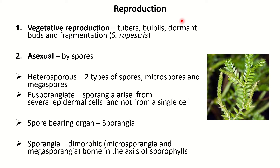Selaginella reproduces vegetatively by means of tubers, bulbils, dormant buds, and fragmentation. Tubers appear towards the end of the growing season. They may be aerial, developing at the apical end of aerial branches, or subterranean. Under favorable conditions, these tubers germinate into a new plant.